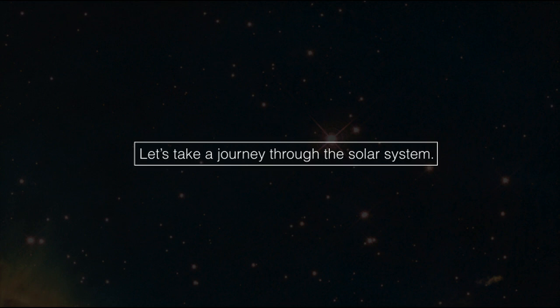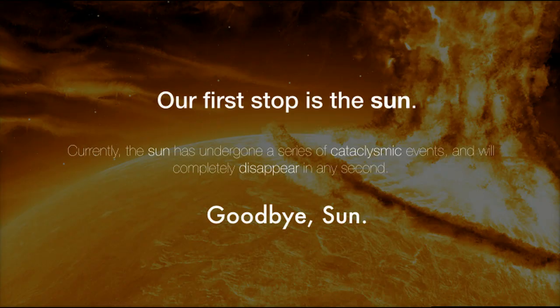Let's take a journey through the solar system. Our first stop is the Sun. Currently, the Sun has undergone a series of cataclysmic events and will completely disappear in any second. Goodbye, Sun.